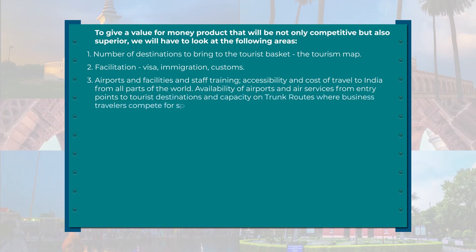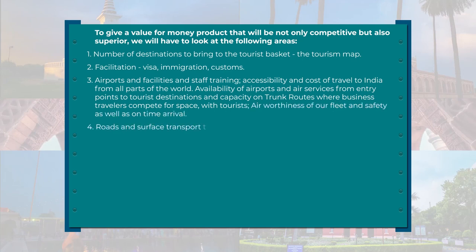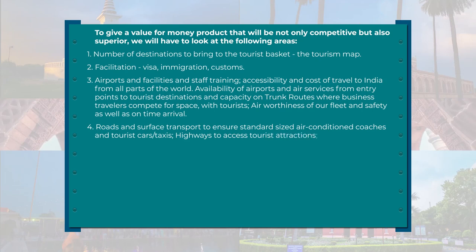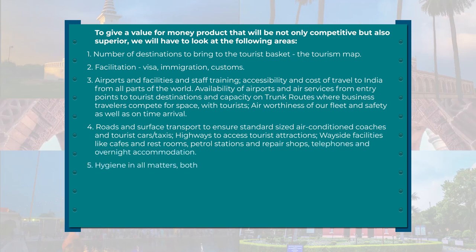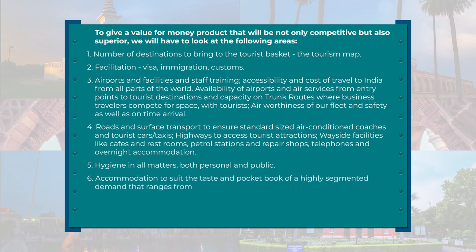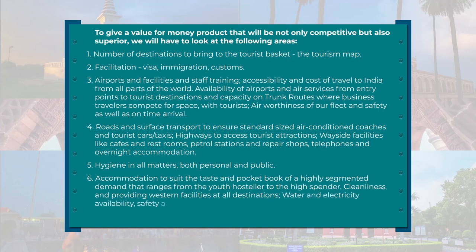Number two: facilitation. The visa regime, the immigration system, and customs all contribute to the tourist's overall experience in the country. Immigration officers are the first to interact with tourists when they land in India, so there is an imperative need to train immigration officers on how to deal with tourists — not act as policemen but as facilitators, answering with a smile. India has been doing a great deal regarding visa facilitation and now has electronic tourist visa on arrival applicable to tourists from 168 countries.